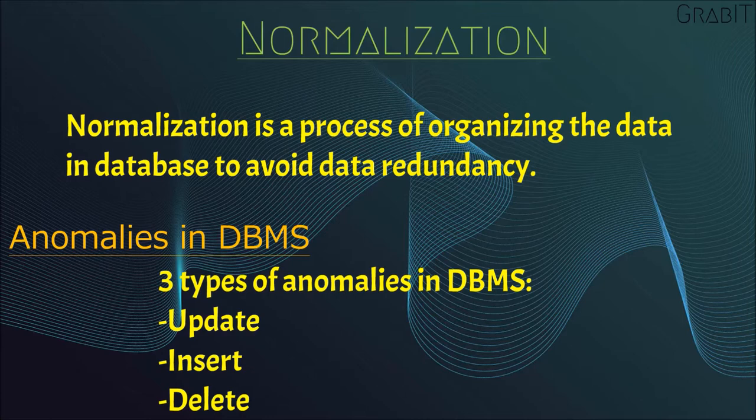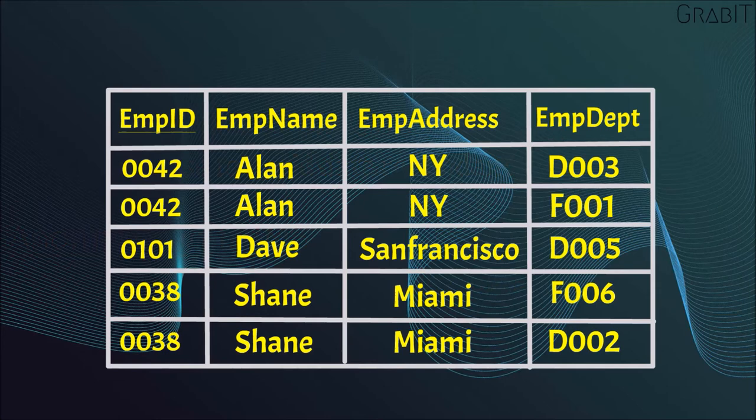Let's take an example to understand this. Suppose a company stores the employee details in a table named Employee. The above table is not normalized. We will see the problems that we face when a table is not normalized.